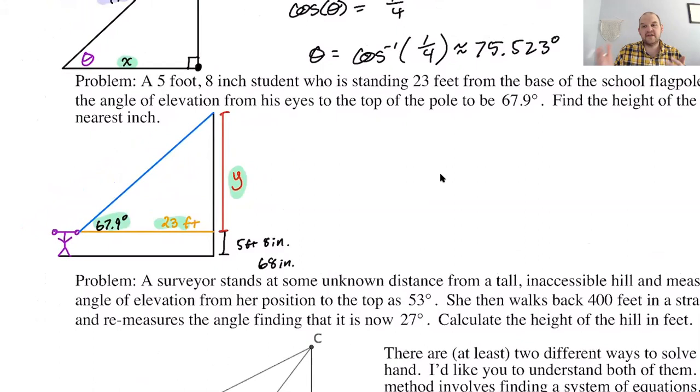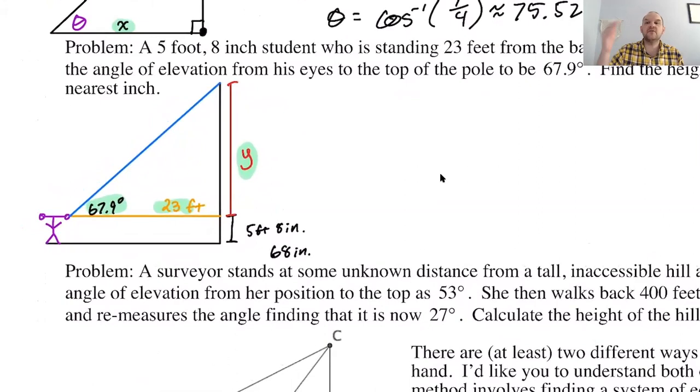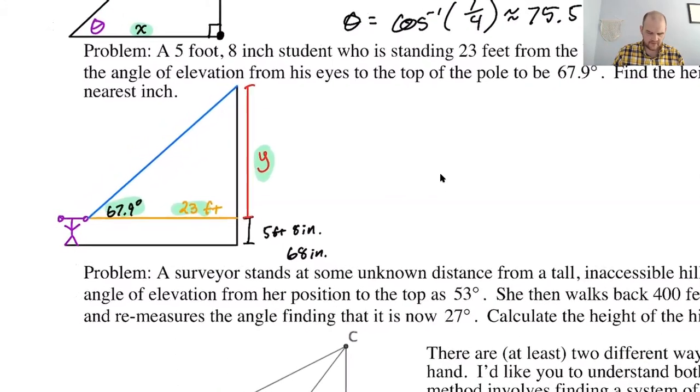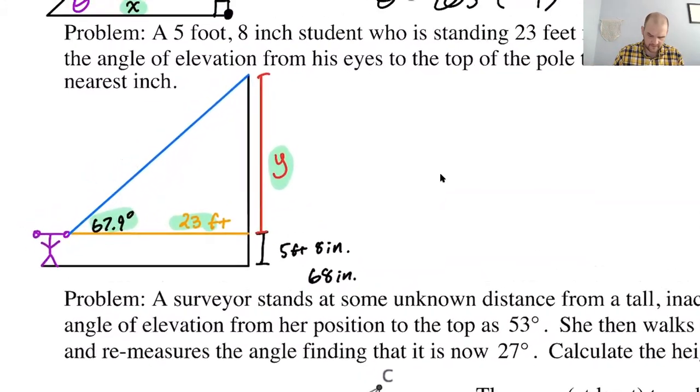You actually find in application problems tangent is super common because it's unusual to know, other than when you have a ladder leaning against something, the line of sight distance from where you are to the top of something. Way more normal to know how far you are horizontally and how tall the thing is. Or you want to know how tall the thing is. The hypotenuse, you get this sense with the Pythagorean theorem that it's the most important part. I don't know in the application world if that's necessarily true. All right.